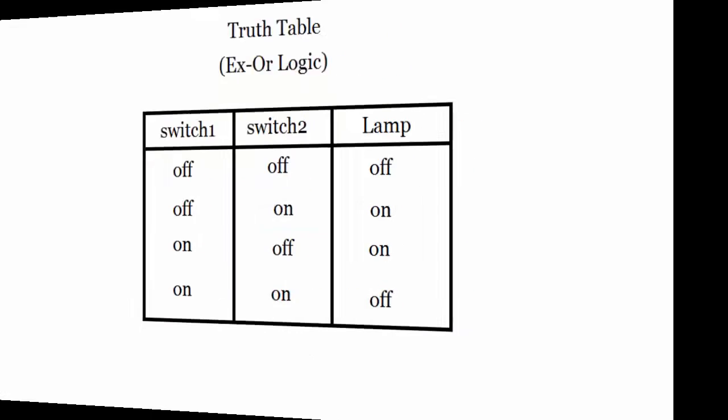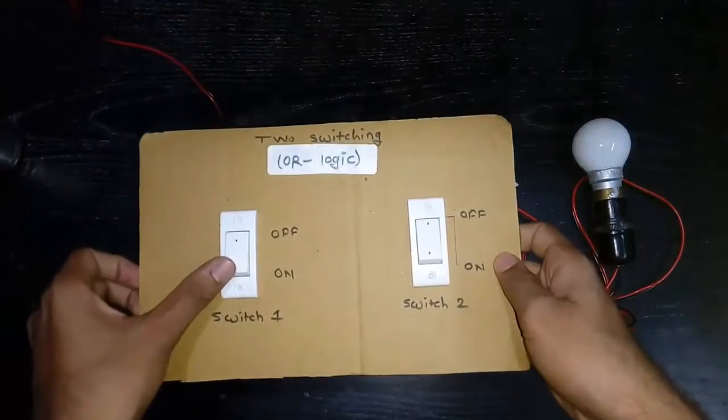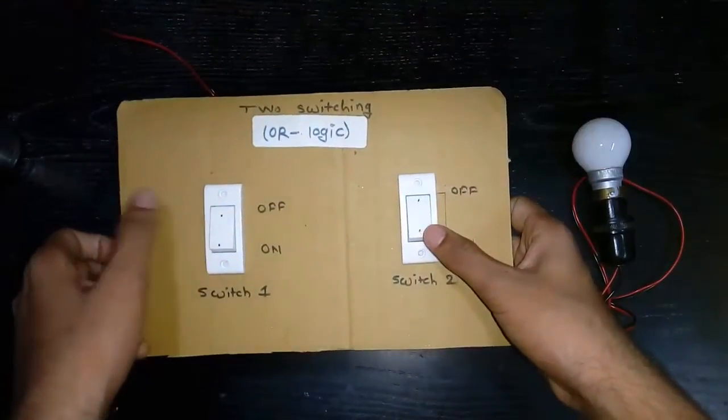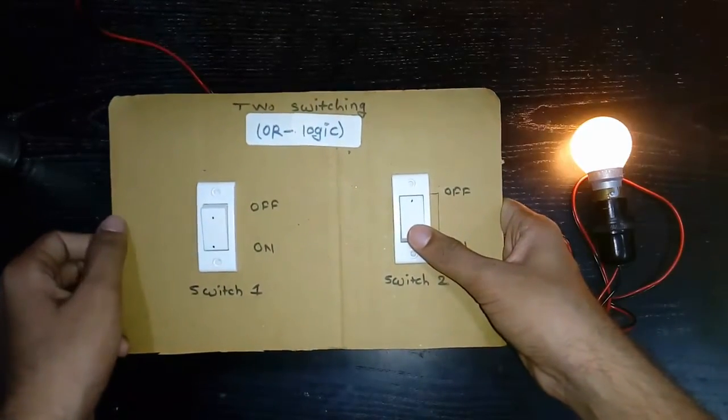Now let's turn to two-way switching for OR logic. When switch 1 is on, the bulb is on. When switch 2 is on, the bulb is on. When both switches are on, the bulb is on.